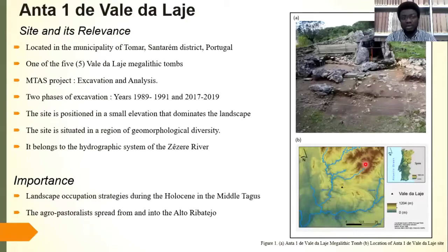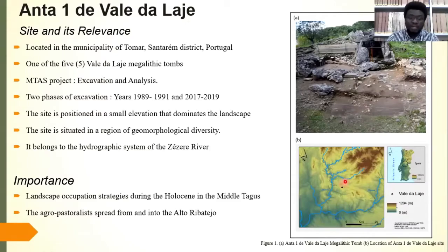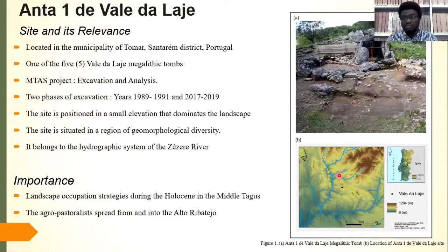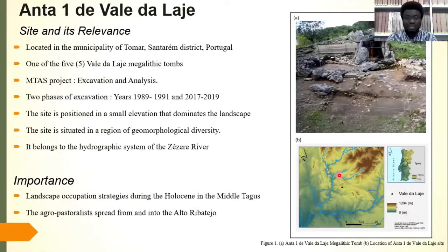The site itself, Antawande Valdelaj, is located in the municipality of Tomar, Santarém District, Portugal. It is one of the five Valdelaj megalithic monuments and the only one that still exists today. It belongs to the MITAGE project — reassessing the mechanism of the agro-pastoralist project in central Portugal — and over the years, a lot of excavations and analyses have been carried out on the site.